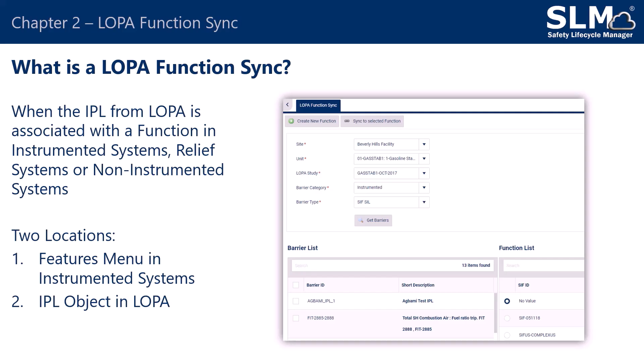Although the process is the same with any of the design modules, this video will be specifically looking at an Instrumented Systems example. There are two main locations where you can perform this LOPA function sync. One is in the Features menu in Instrumented Systems, and the second is the IPL or barrier object in LOPA.